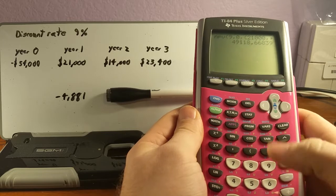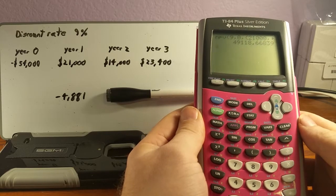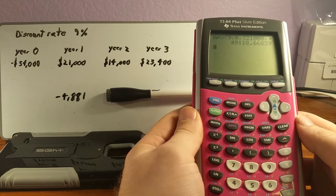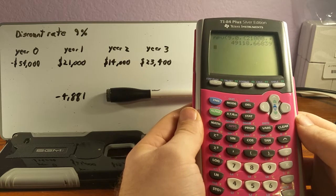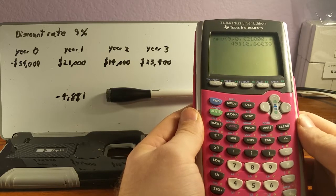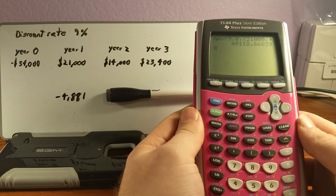And what did we come up with? We came up with $49,118.66839. Now, the how far you take the decimal is up to you. And it depends largely on what kinds of questions you're answering. We're just going to go ahead and take the whole thing this time.